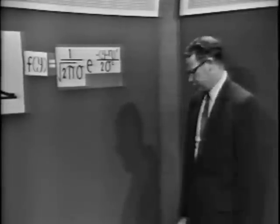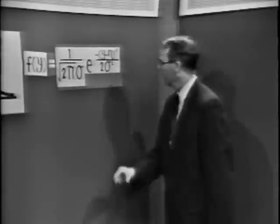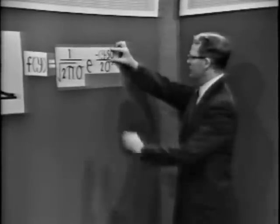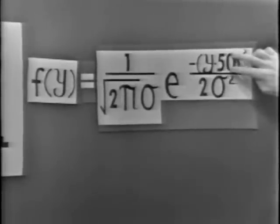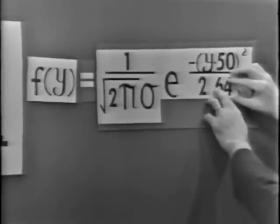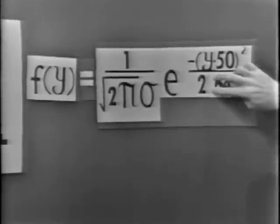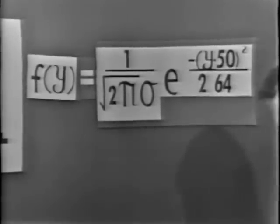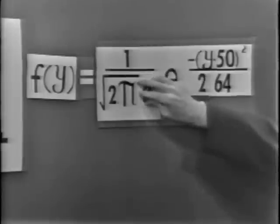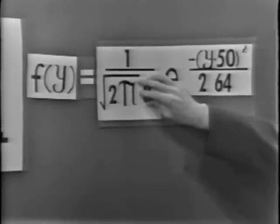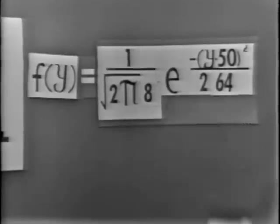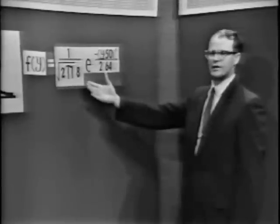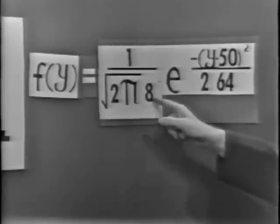Let's see what our normal function looks like in our particular case. The mean of that distribution was 50, the variance was equal to 64, and substituting in for the standard deviation — the positive square root of the variance — we get sigma equal to 8. So the exact mathematical equation for that particular normal curve is: 1 over the square root of 2π times 8, times e to the minus quantity Y minus 50, quantity squared, divided by 128.